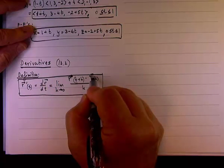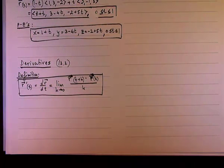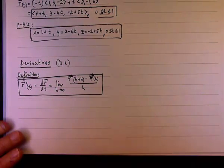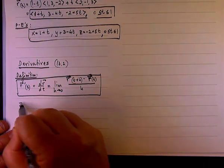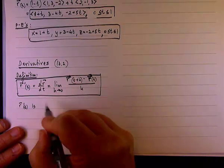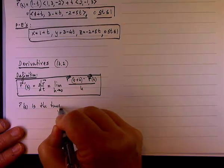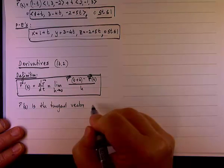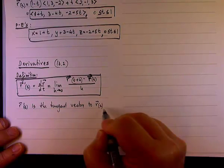And of course, we can develop all kinds of theories or properties based on this limit definition. We're going to say that one property is r'(t) is the tangent vector to the vector function r(t).